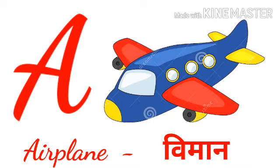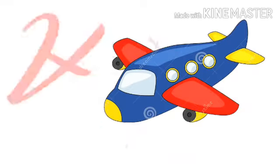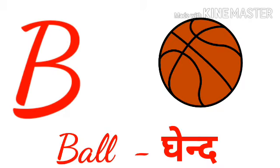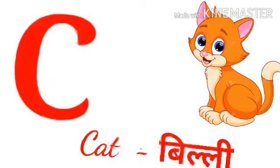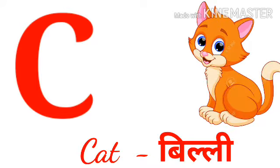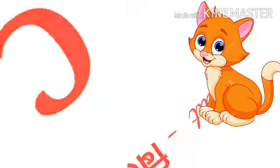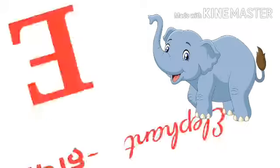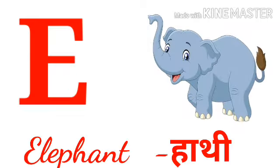A for airplane, airplane means woman. B for ball, ball means gained. C for cat, cat means billy. D for dog, dog means kutta. A for elephant, elephant means hathi.